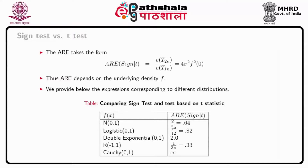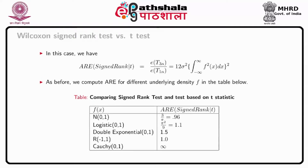We observe that the sign test is always less efficient than the t-statistic based test except for the double exponential distribution. For normal parents, we would require 36 percent more observations for the sign test compared to the t-test to get the same performance. This is not unexpected as the sign test uses only information about the signs of the differences. However, for heavy-tail distributions like the double exponential, the quality of information used by the sign test improves and it becomes twice as efficient as the t-statistic based test.